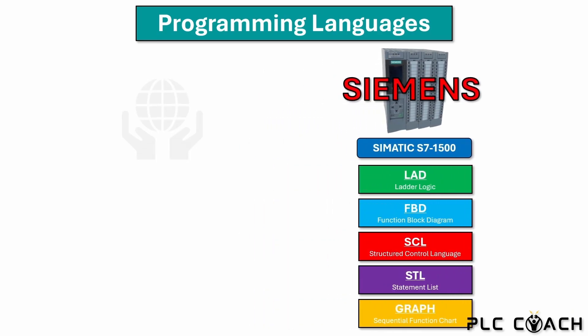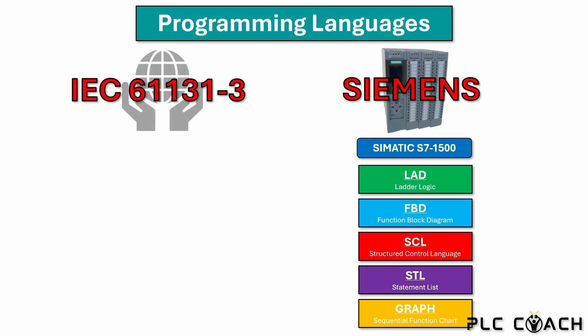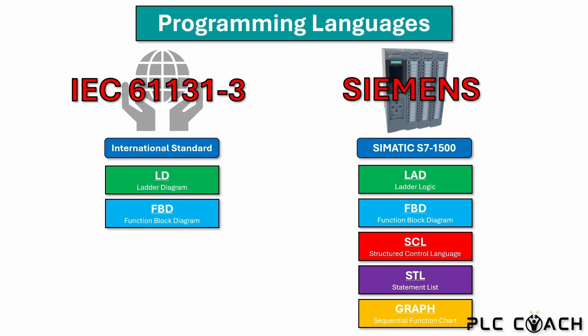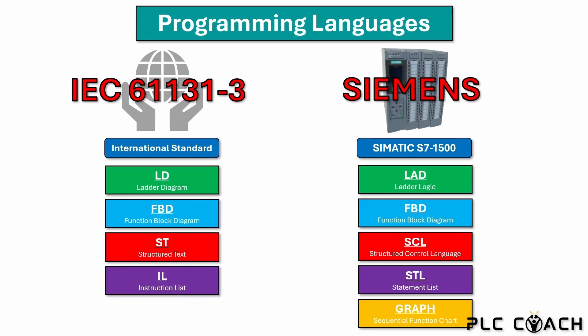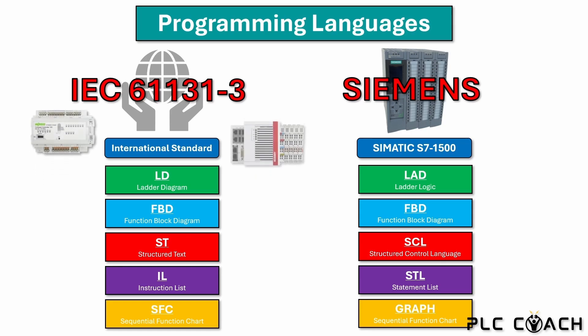Most companies follow the international standard IEC 61131-3 which aims to standardize PLC programming. In this standard the programming languages have slightly different names, but they are still very similar to the ones used by Siemens. For example, in the standard, ladder logic is called ladder diagram, SCL is called Structured Text ST, STL is known as instruction list IL, and S7 Graph is referred to as sequential function chart SFC. Siemens doesn't strictly follow the international standard. However, if you know how to program a Siemens controller, you will find it easy to work with other devices, as programming languages across different manufacturers are usually quite similar.